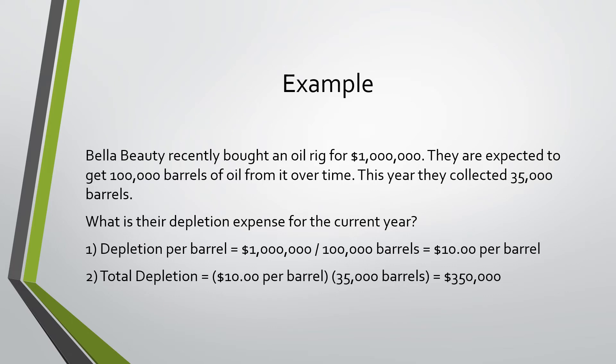The first step is to find the depletion per barrel. We do the $1 million purchase price divided by the number of barrels we expect to collect. This gives us $10 per barrel. To find the total depletion, we take the $10 per barrel and multiply it by the 35,000 barrels they collected. This gives us a total depletion expense of $350,000.